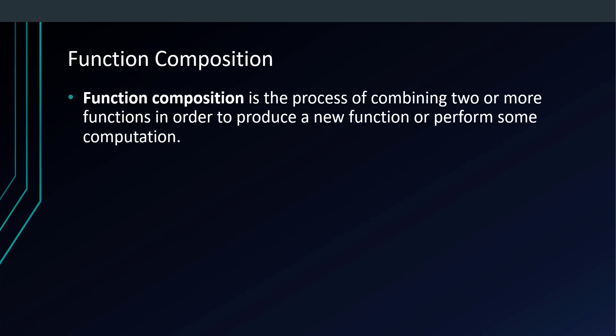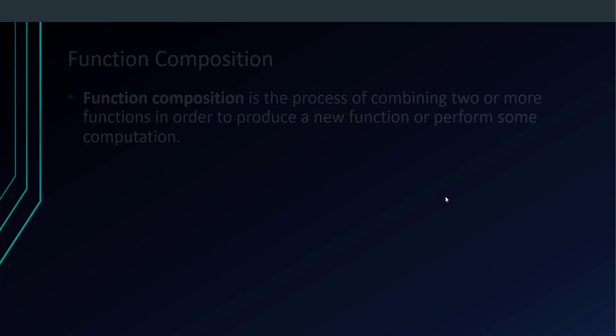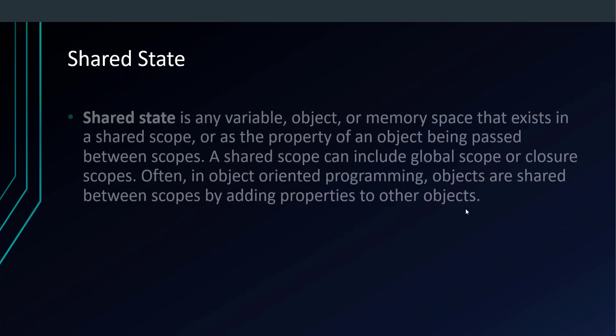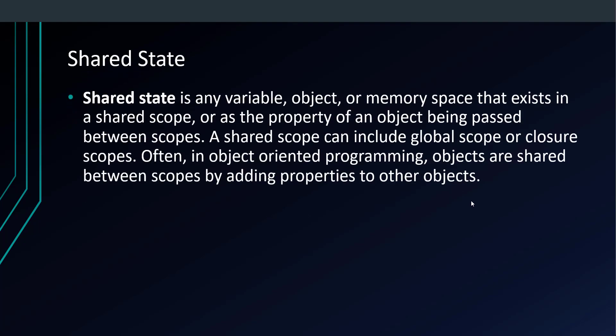The next concept we're going to talk about is shared state. Shared state is any variable, object, or memory space that exists in a shared scope, or as a property of an object being passed between scopes. A shared scope can include global scope or closure scope, often in object-oriented programming.